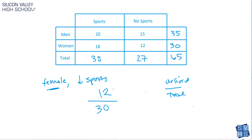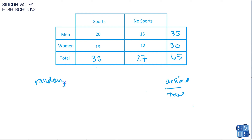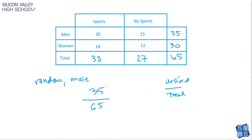So I think you're starting to get the hang of it. What if they said: if a random person is pulled, what is the probability that it's a male? They didn't say sports or no sports or anything. Again, if it's a random person, the total pool of possible people we're pulling from is 65. They just said what's the probability that it's a male — that includes sports players and no sports players — so that would be 35 out of 65.